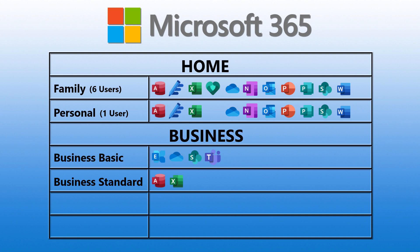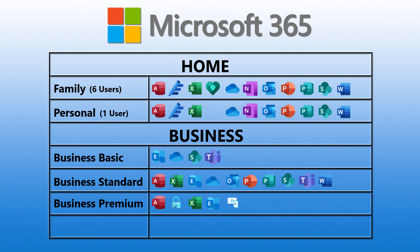In Microsoft 365 Business Standard, there is Excel, Access, Exchange, OneDrive, Outlook, PowerPoint, Publisher, SharePoint, Teams, and Word. Then we have Microsoft 365 Business Premium, which is Access, Azure Information Protection, Excel, Exchange, Intune, OneDrive, Outlook, PowerPoint, Publisher, SharePoint, Teams, and Word.